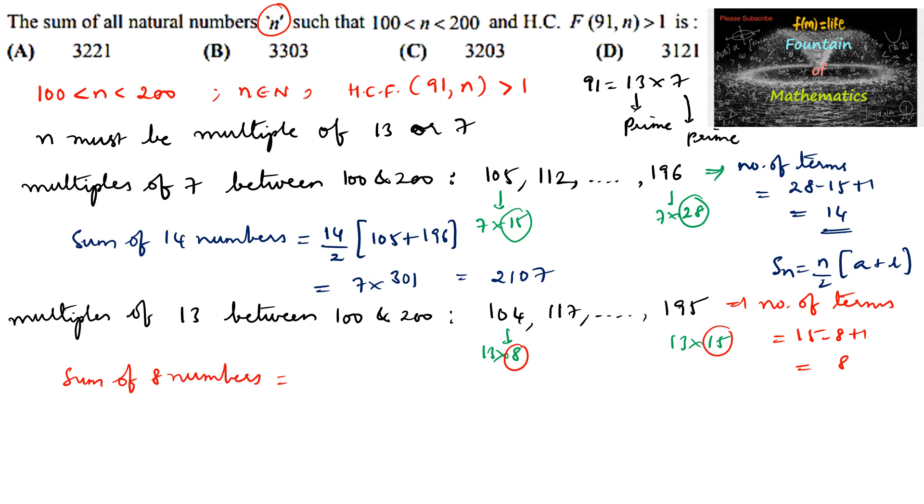Is equal to 8 divided by 2, first number is 104 and the last number is 195. So it is 4 into 299. So 1200 minus 4 is 1196.